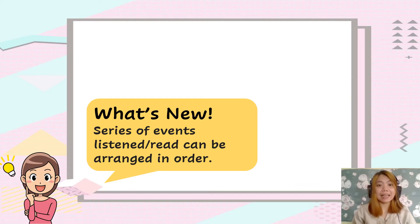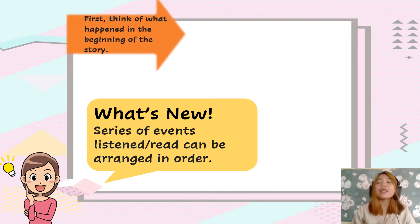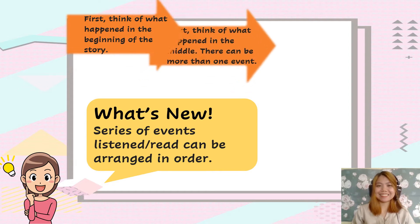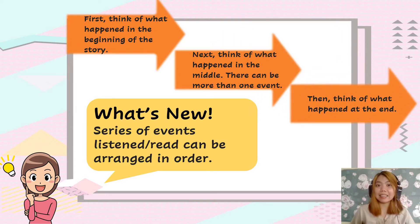Now class, a series of events that you listen or read can be arranged in order. Here are three tips. First, think of what happened in the beginning of the story. Next, think of what happened in the middle — there can be more than one event. And then lastly, think of what happened at the end.